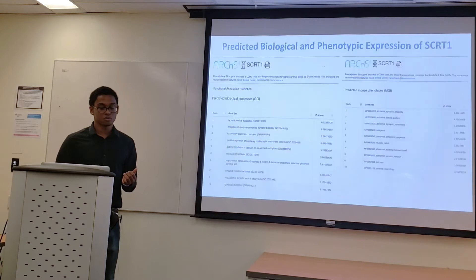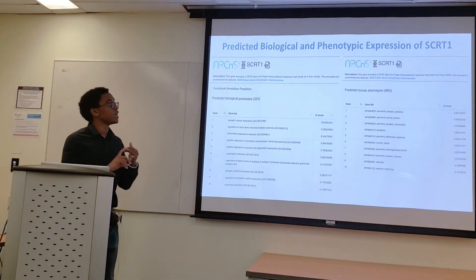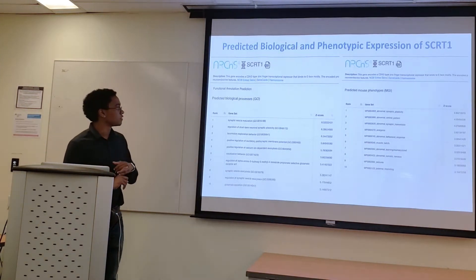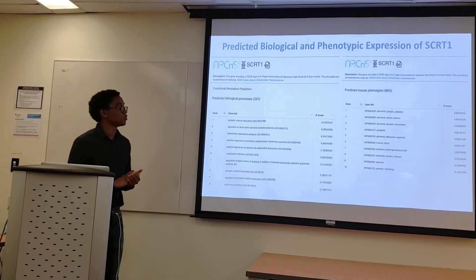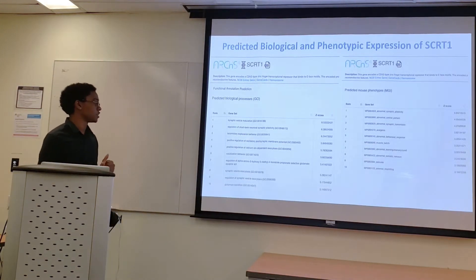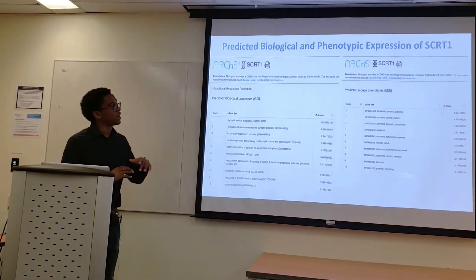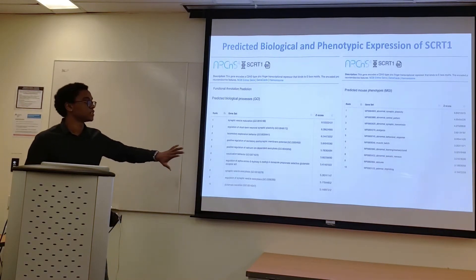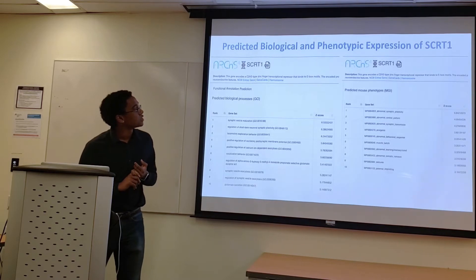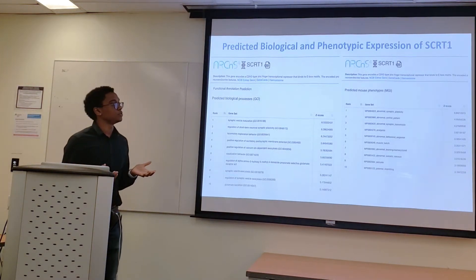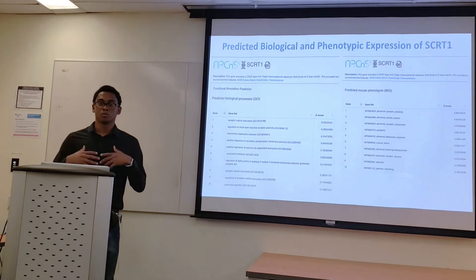We then ran SCRT1 through ARCHES4, which returned a list of potential predicted biological functions, processes, and predicted mouse phenotypes. To the left, SCRT1 was found in synaptic vessel maturation, regulation of short-term neuronal synaptic plasticity, and vocalization behavior — all dealing with brain functions related to memory and long-term differentiation. To the right, predicted mouse phenotypes of interest included abnormal behavioral response, abnormal learning, memory, and coordination, and abnormal synaptic plasticity — all related to symptoms found within Alzheimer's, such as abnormal memory, abnormal cognitive function, and abnormal memory development.